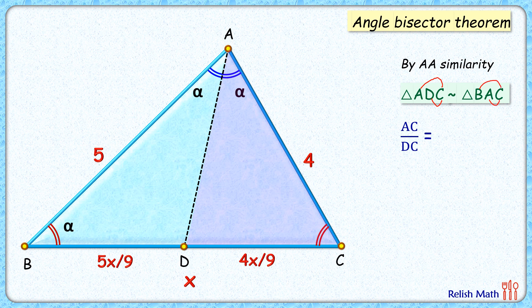Now putting the values: AC is given as 4 centimeters, DC is 4x/9. On the right-hand side, BC is x centimeters and AC is again 4 centimeters. Simplifying it, 4 and 4 cancel, giving us x squared equals 36, or x equals 6 centimeters. And that's our answer!